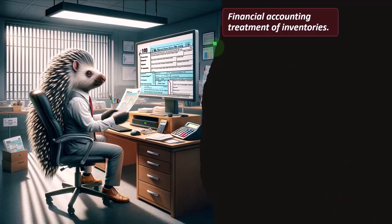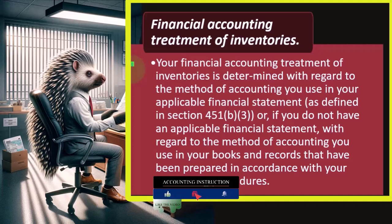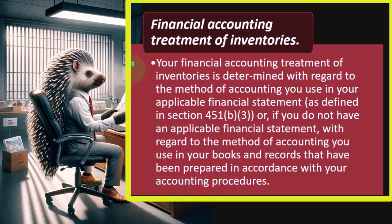Financial accounting treatment of inventories: your financial accounting treatment of inventories is determined with regard to the method of accounting you use in your applicable financial statement, as defined in section 451(b)(3), or if you do not have an applicable financial statement, with regard to the method of accounting you use in your books and records that have been prepared in accordance with your accounting procedures. Obviously, if you're talking about publicly traded companies that have inventory, they would typically have to track the inventory. But even for a small business trying to be in compliance with the tax code, whatever your normal accounting system is to track the inventory applies.